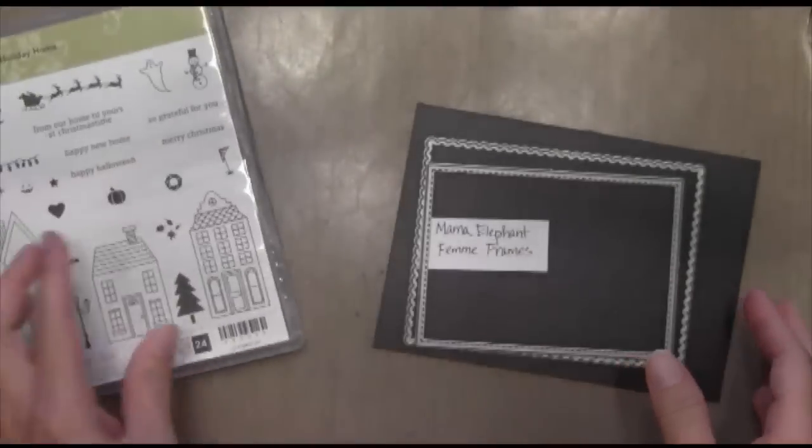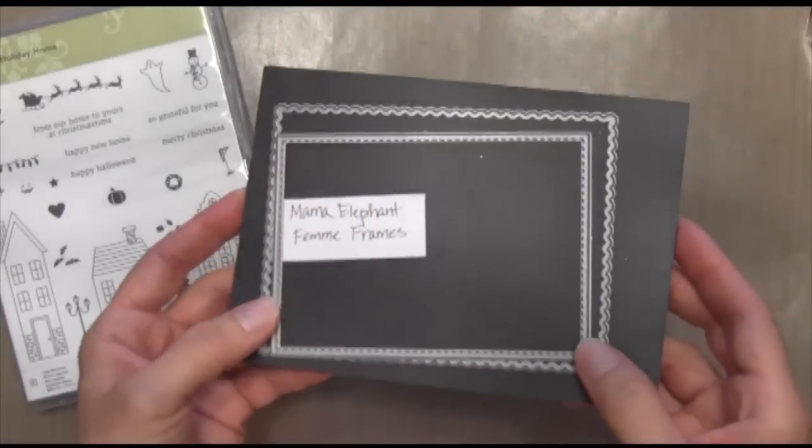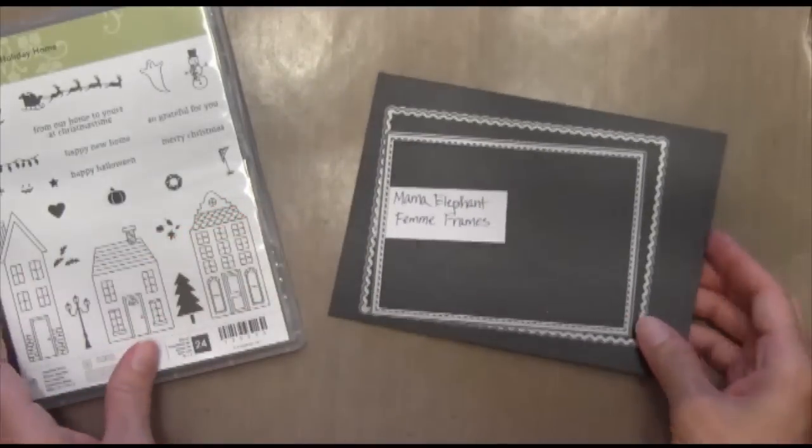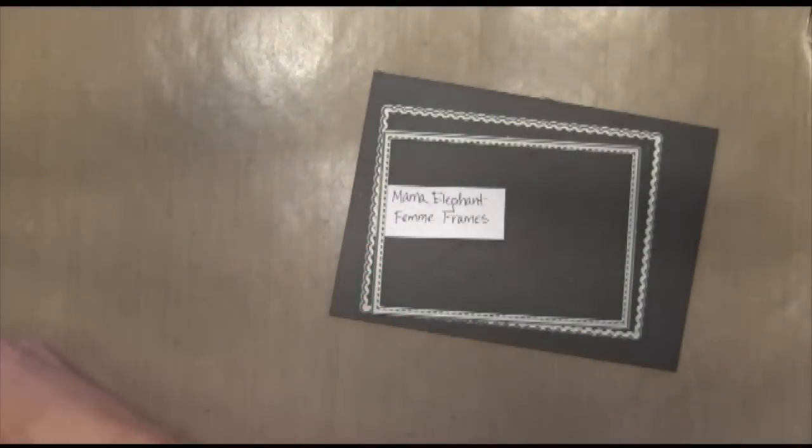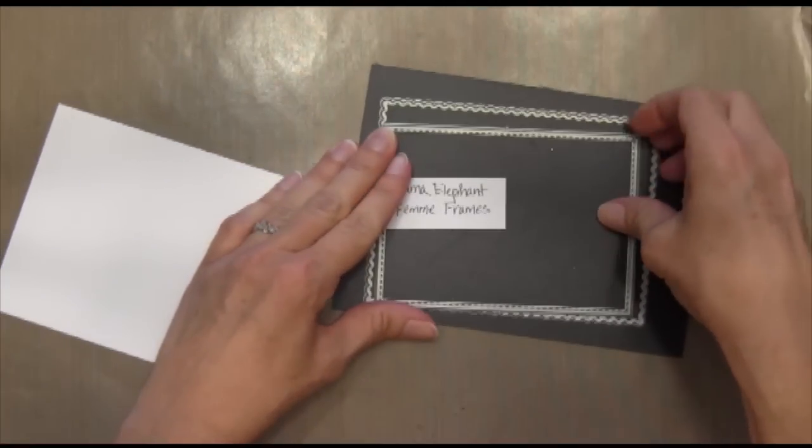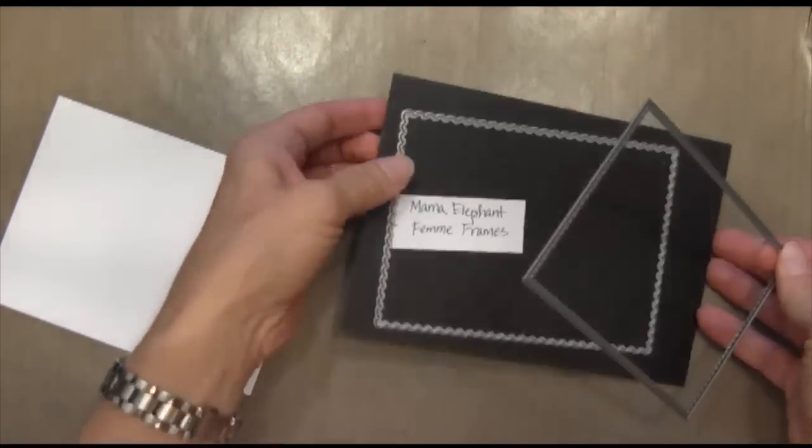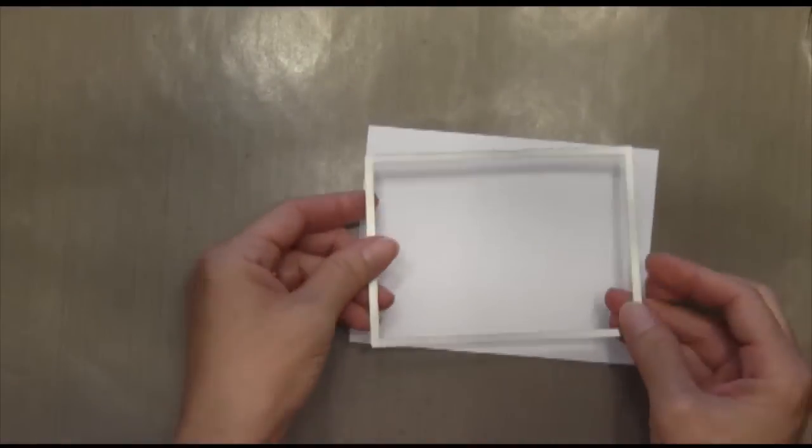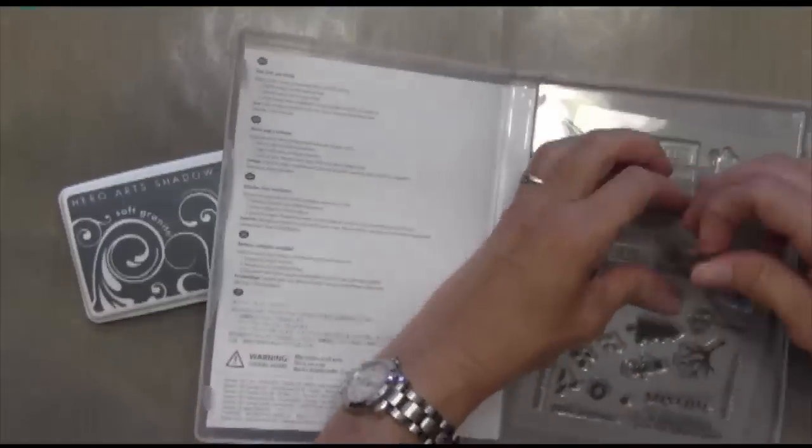It's got a lot of really cool pieces to include different holidays. I'm also using the Mama Elephant Femme Frames. The first thing I'm going to do is take the inside frame from this die set, which I love by the way. It's kind of hard to find, so if you can grab it, you should grab it while you can. I'm going to die cut that out of some Neenah Solar White cardstock.